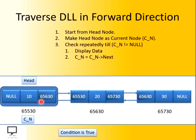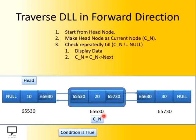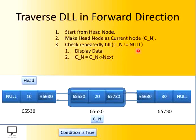The next field of the current node holds address 65630. Now we are going to make this the current node. Let's see — this is my current node now. After this, we check again whether my current node is not equal to null. The condition is true. After that, display the data and move to the next node.